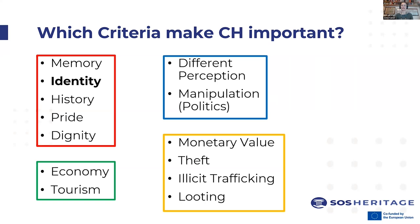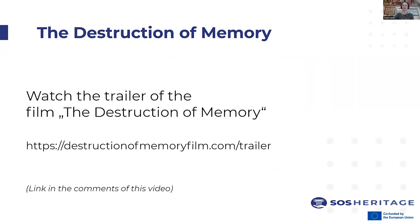The last box is the yellow one about monetary value linked to theft of cultural heritage, illicit trafficking, looting, and the whole topic of illicit trade of cultural heritage — one of the biggest threats to cultural heritage in the 21st century. Regarding memory, identity, history, pride and dignity, there's a great movie called The Destruction of Memory. You can find the link on screen and in the additional learning material, so you can watch the trailer at least to hear first-hand sources talking about what it actually means to lose cultural heritage and lose part of your history.